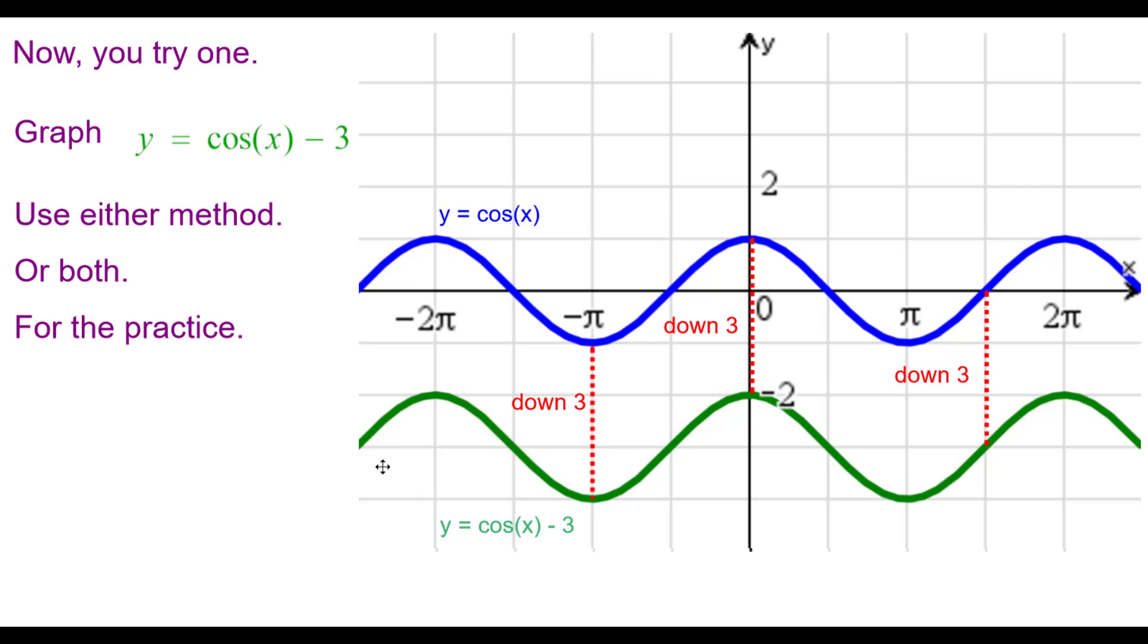And here's the answer in green right here. Compared to the parent function, every single point is shifted down three units because of that minus three.